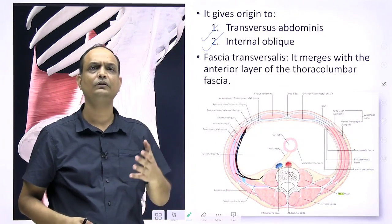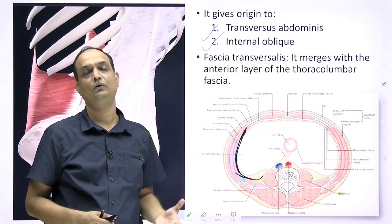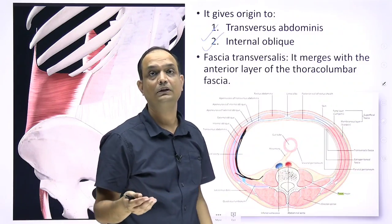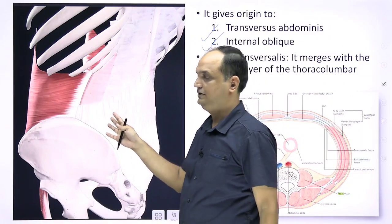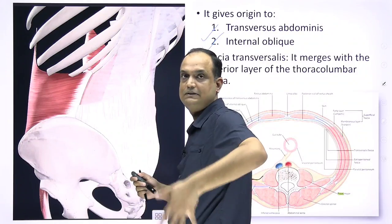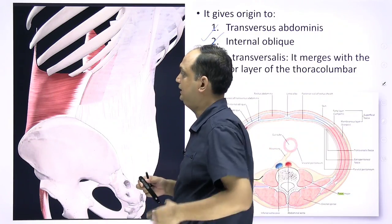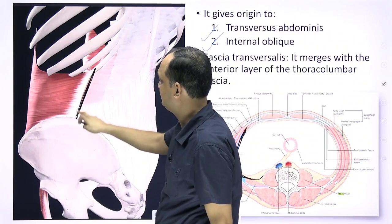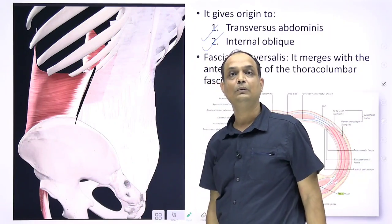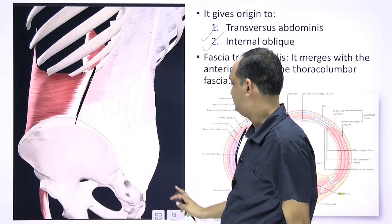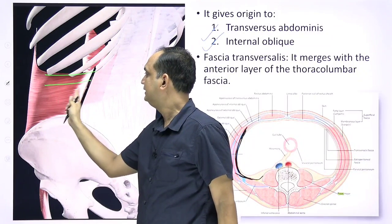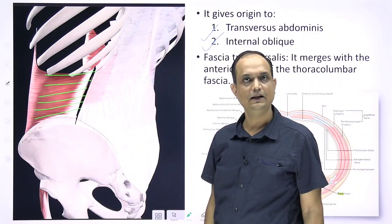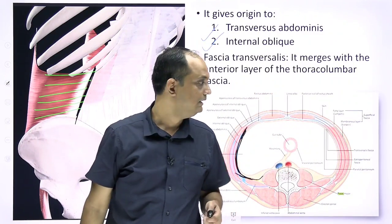When studying the anterior abdominal wall, you encounter the origin of transversus abdominis and internal obliques from the thoracolumbar fascia. The lateral border of the thoracolumbar fascia runs from the 12th rib to the iliac crest, and anterior to this margin is the origin of transversus abdominis.